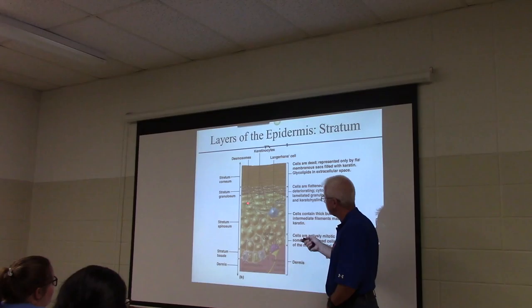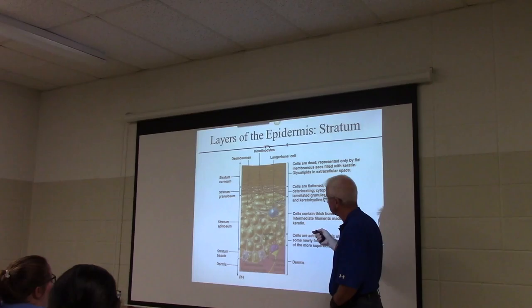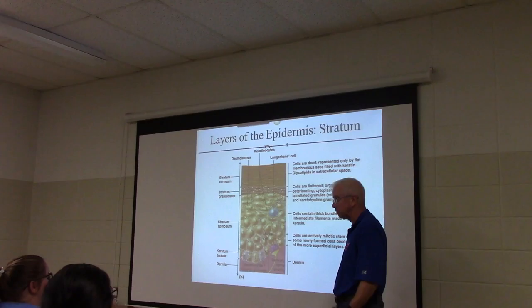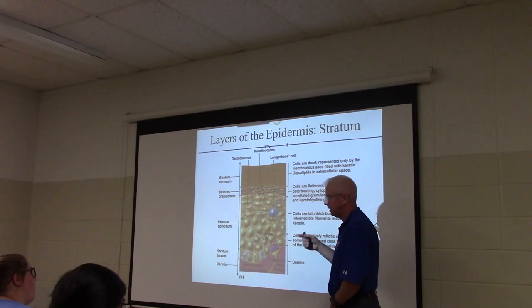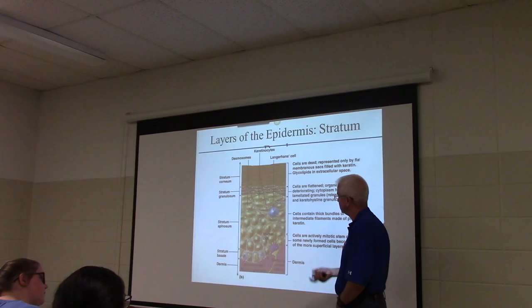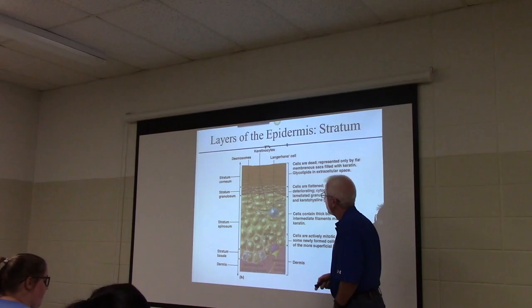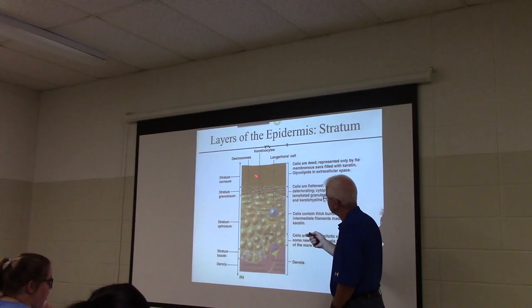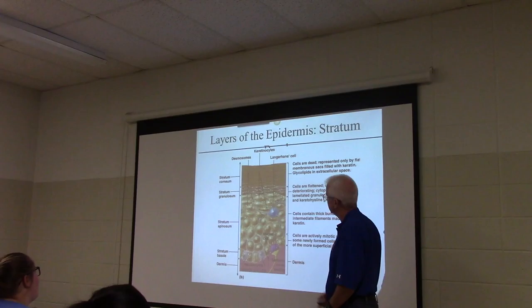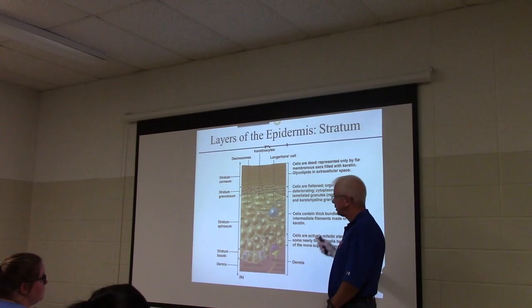In thick skin, there is a layer called the stratum lucidum — it's found only in limited locations: the scalp, palms, and soles of your feet. It stains clear with a typical hematoxylin stain, so it's difficult to see and not shown on this picture. The next layer is the stratum granulosum, where you can see granulated cells of keratin. The final layer, normally 15 to 30 cell layers thick, is the stratum corneum — the outer layer.